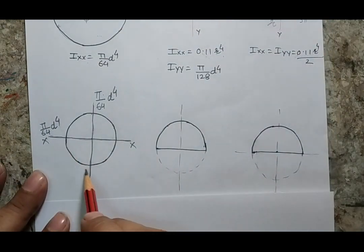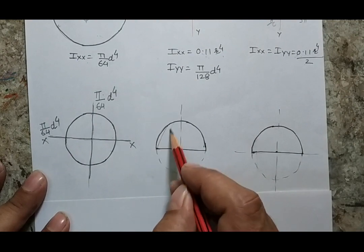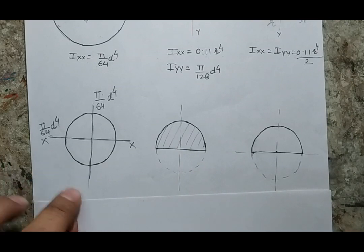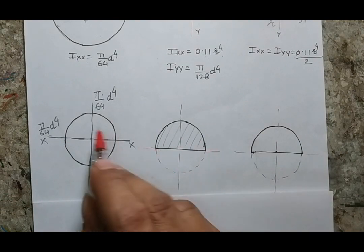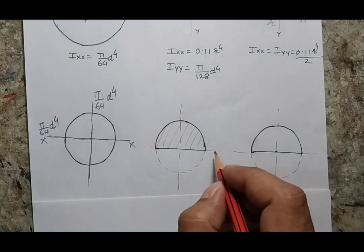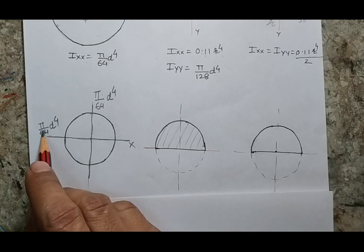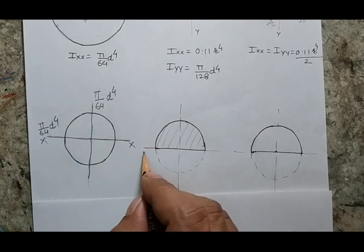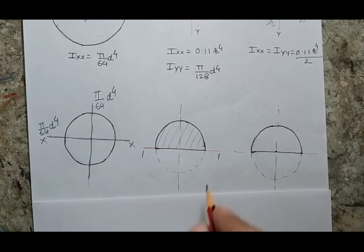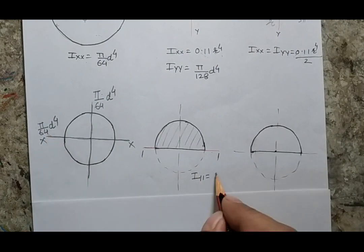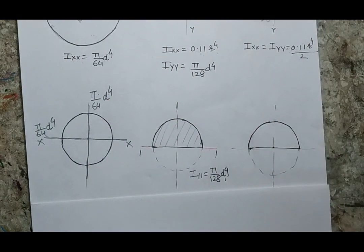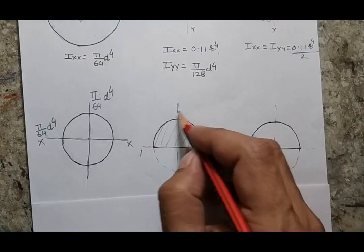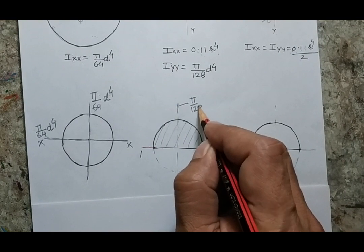Suppose I remove the lower half of the circle, leaving only the upper half — the semicircle. If I consider the same x-x axis and the half part has been removed, directly you can write that the moment of area about this line will be half of the complete circle's value. I rename this axis as 1-1, so I₁₁ = (π/128)d⁴. Similarly, the vertical axis moment of area also becomes (π/128)d⁴.